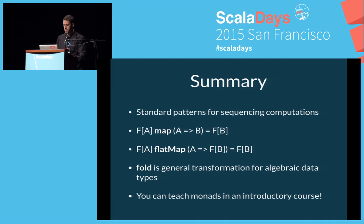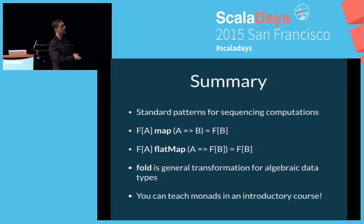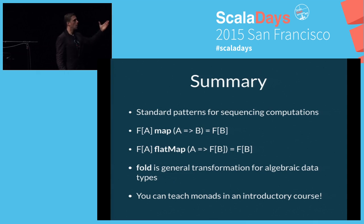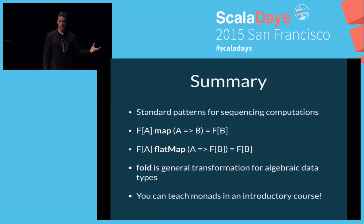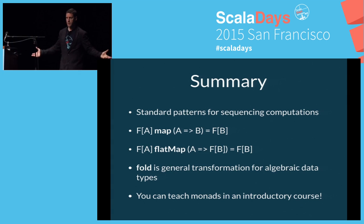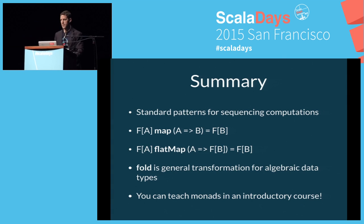Summary of sequencing computation: there are very standard patterns. Map looks like F[A] with function A→B giving F[B]. Flat map looks like F[A] with function A→F[B] giving F[B]. Fold applies to algebraic data types and is a general transformation. We also just snuck in monads — flat map, basically. They're not scary, not a big deal. We teach them in introductory courses. There's nothing to be concerned about, perhaps beyond the name.